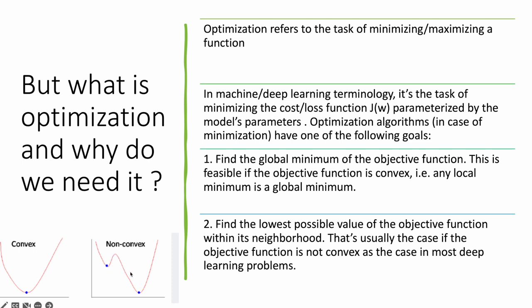In the case of a non-convex function, which is irregular — not a ball shape, going down and coming back up — there are chances there will be various local minima. There is only one global minima, but the goal of the objective function would be to find at least the local minima. Convex functions are much easier to optimize. Linear regression and logistic regression are convex forms, but deep learning models are usually non-convex and can have multiple local minima.